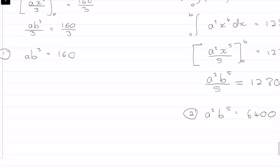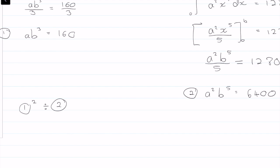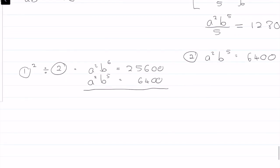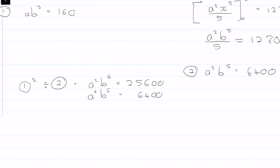So I've got two equations, two unknowns. The most obvious way I see is to take equation 1, square it, and then divide by equation 2. Squaring equation 1 gives a squared b to the 6 equals 160 squared, which is 25,600. Dividing by equation 2, which is a squared b to the 5 equals 6,400 — the a squared terms cancel, and we're left with b equals 25,600 divided by 6,400, which is equal to 4.